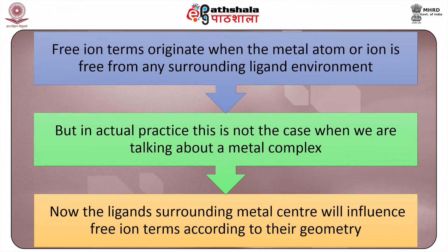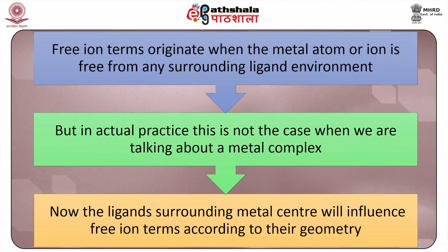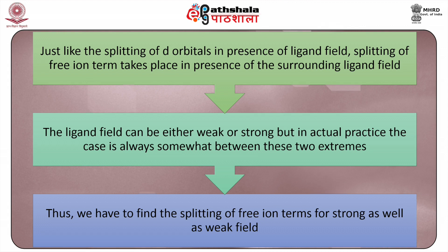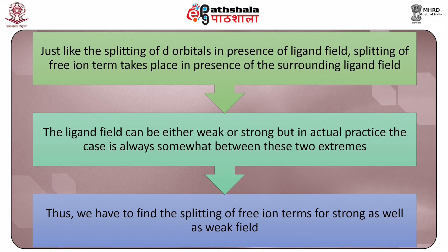Free ion terms originate when the metal atom or ion is free from any surrounding ligand environment. But in actual practice this is not the case when talking about a metal complex. The ligands surrounding the metal center will always influence free ion terms according to their geometry. Just like the splitting of d orbitals in the presence of a ligand field, the splitting of free ion terms will also take place. The ligand field can either be weak or strong, but in actual practice the case is always somewhat between the two extremes. Thus, we have to find the splitting of free ion terms for both strong and weak field cases.